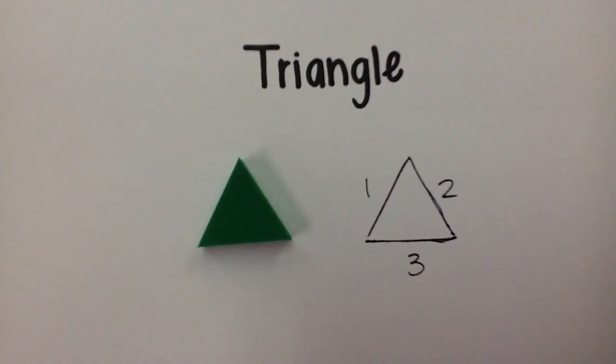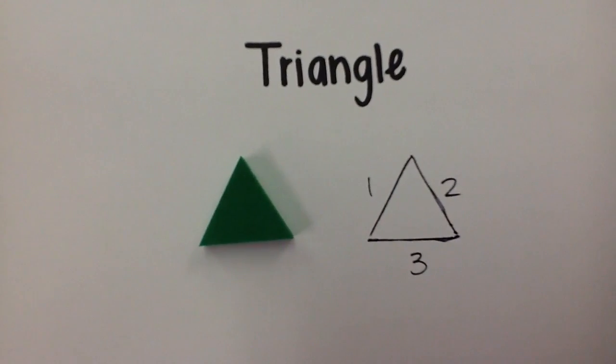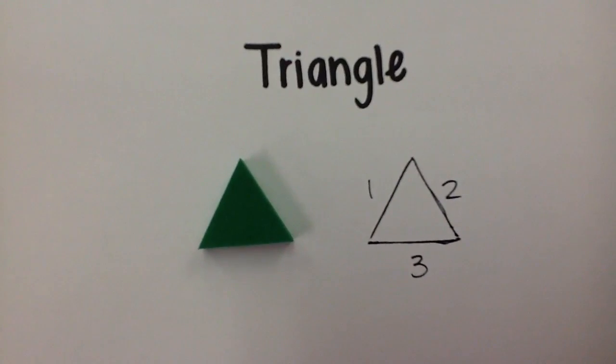The fifth and smallest shape is a triangle. It has three equal sides. In the pattern blocks it is green.